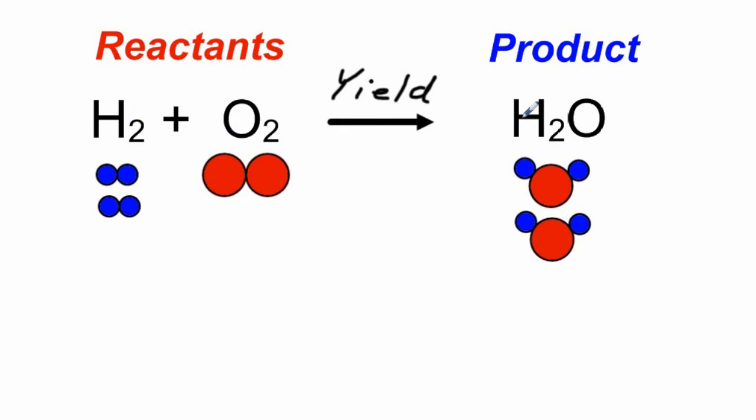So the way we should have really written this equation to show how it works is we should have said we're going to start out with two molecules of H2, we're going to put that together with one molecule of O2, they are going to have a chemical reaction, and they are going to yield or produce two molecules of H2O. Now that is definitely balanced. Look at the relationship between the equation and the model.